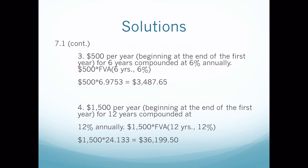Problem four is exactly the same setup with different numbers. We have $1,500 times FVA(12 years, 12%). We go to the FVA table again, find twelve years at twelve percent, and get the multiplier of 24.133. We multiply by $1,500 and we get $36,199.50. So we've done two future value problems and two future value annuity problems.